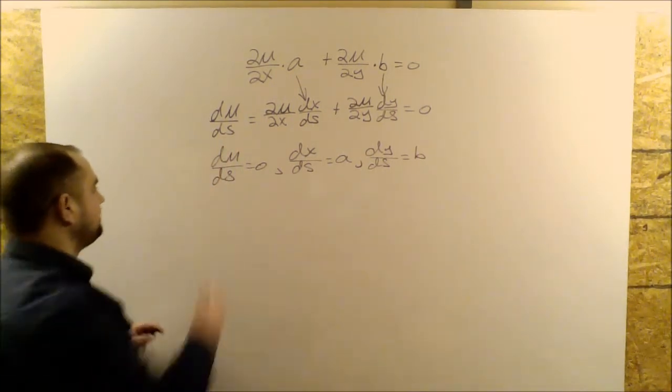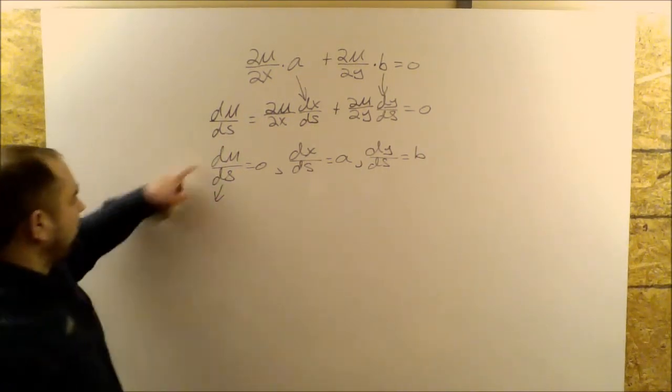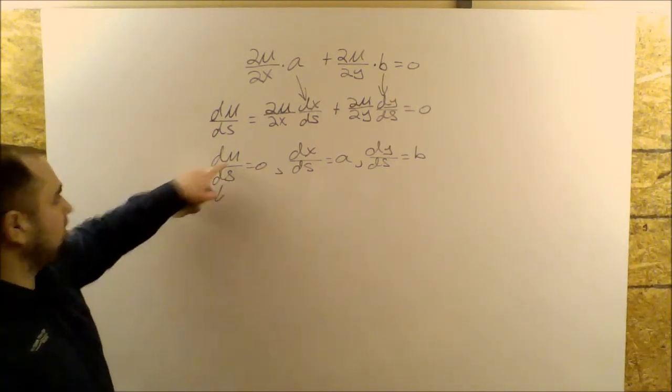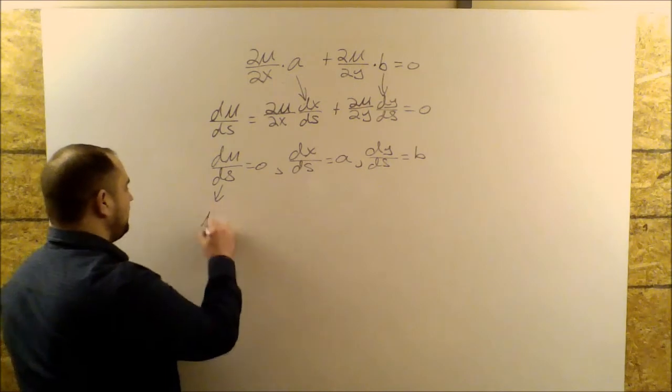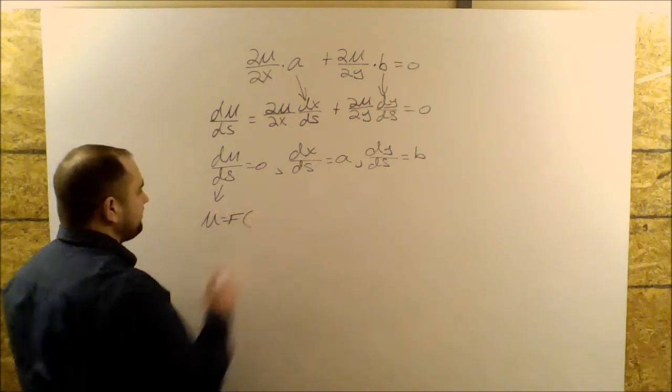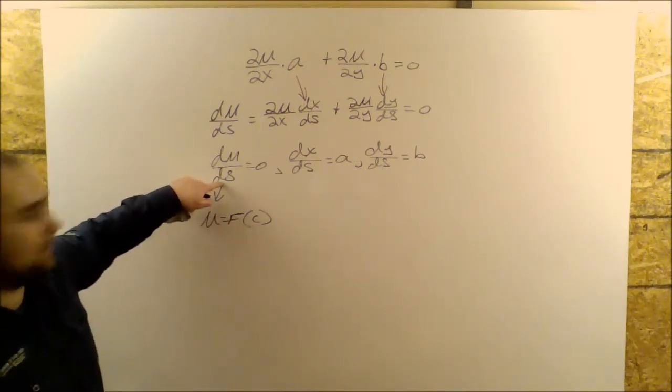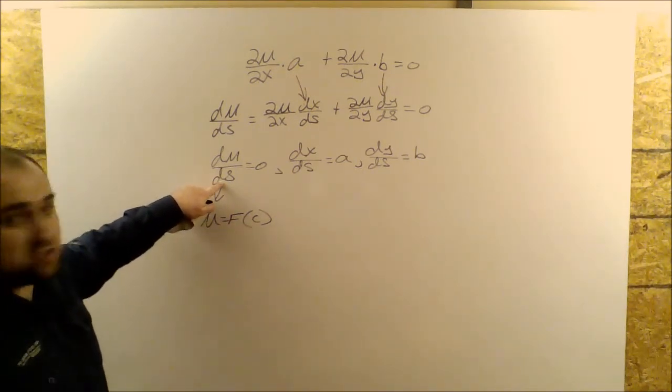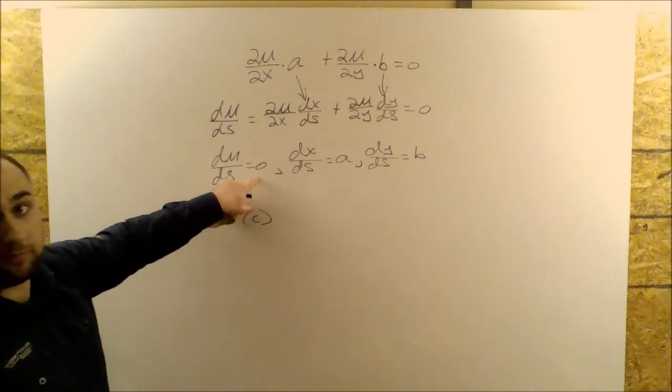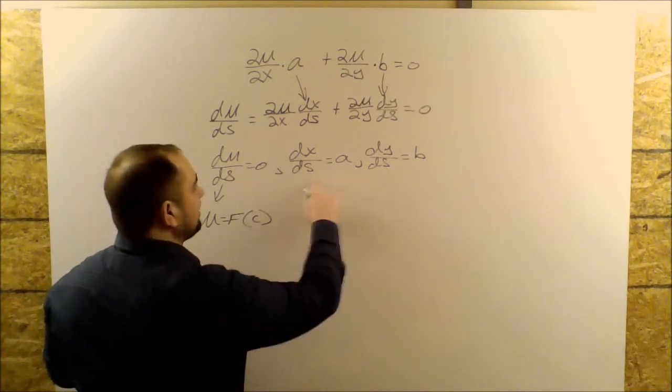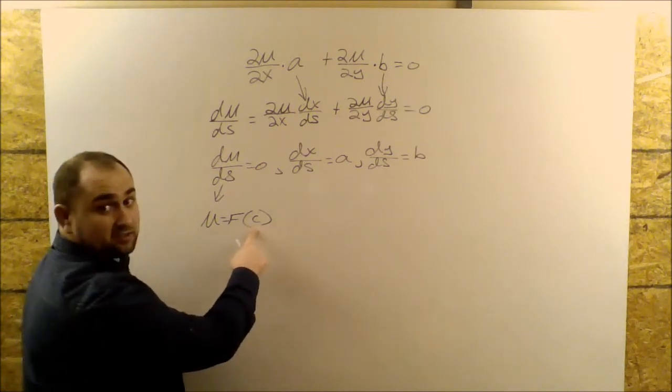Okay, so if we take a look at this guy here, dU over dS is zero. It tells us that U has to be a function that is constant with respect to S, so that when I differentiate it with respect to S, I get zero. Okay, so what we're going to do is we're going to use these two equations here to find out what this constant needs to be.